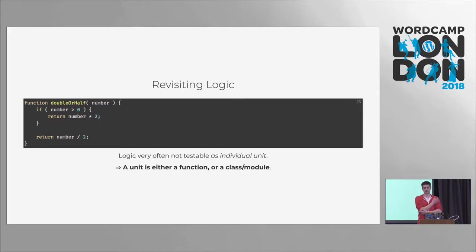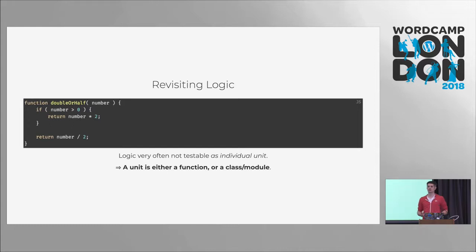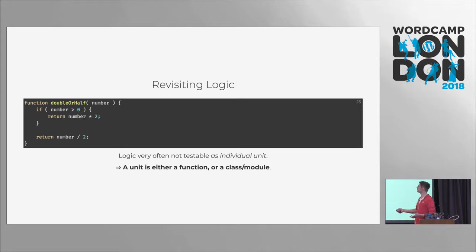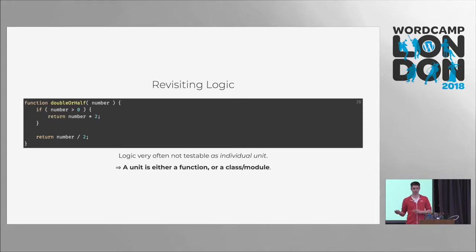Let's think about logic again. In this example, we have three instances of logic: a conditional logic and two arithmetic expressions. The problem is we can test the logic, but we can't test the logic individually — because the program runs from top to bottom, we will execute this piece of software, this will either result in true or false, and depending on that we execute the relevant piece of logic. So we cannot test one piece of logic individually — you can test logic, but not as a unit.